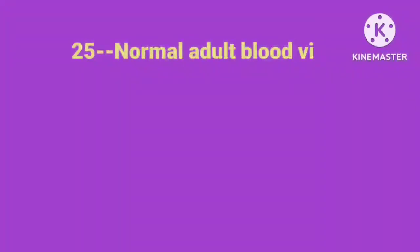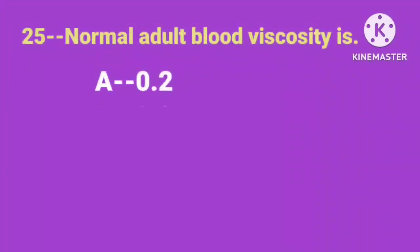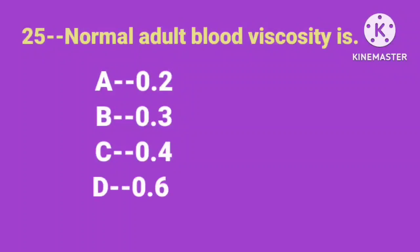Question number 25. Normal adult blood viscosity is. Correct answer is option C, 0.4.